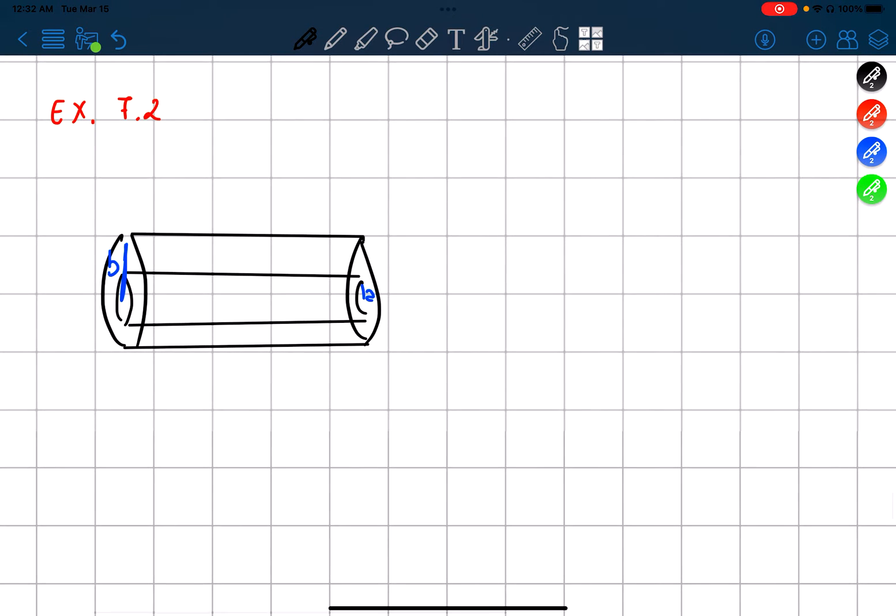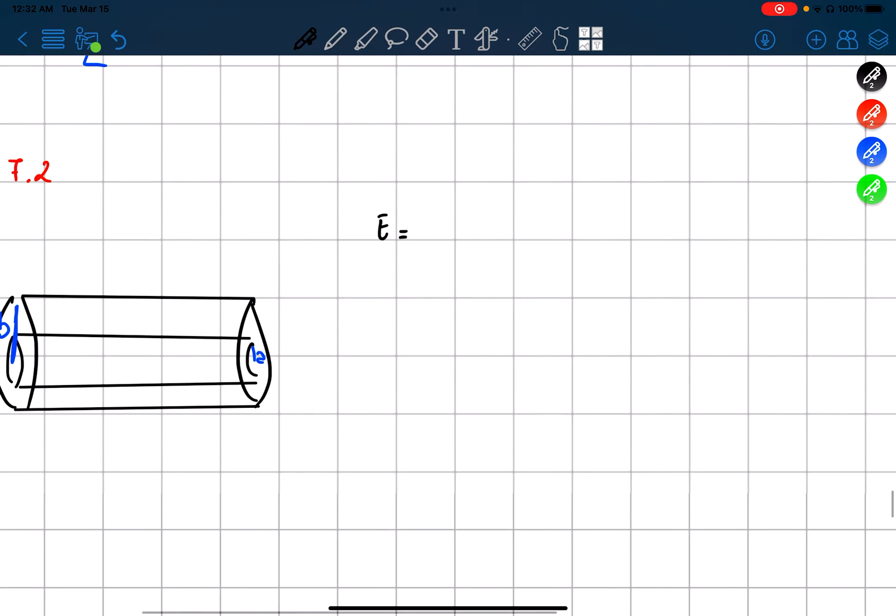First of all, we have to find the electric field. The electric field is equal to what? From what we started in the past, the electric field times dA is equal to the charge enclosed over our epsilon nought.